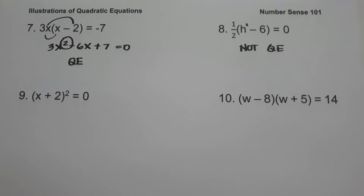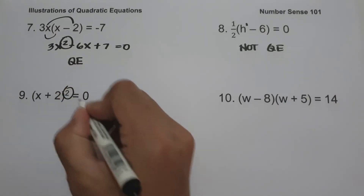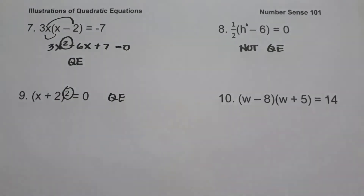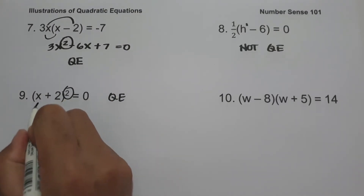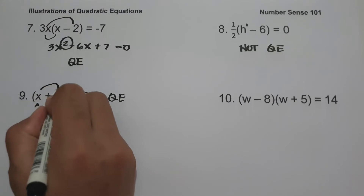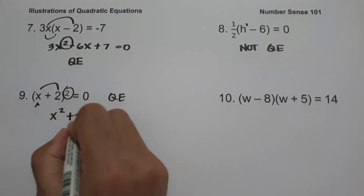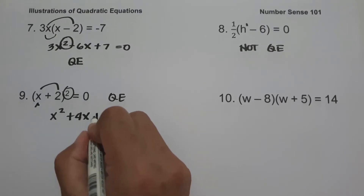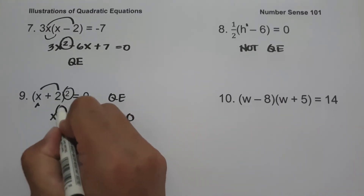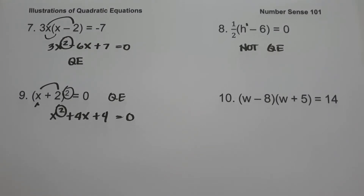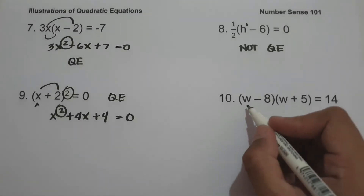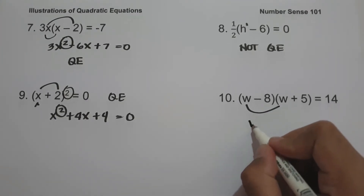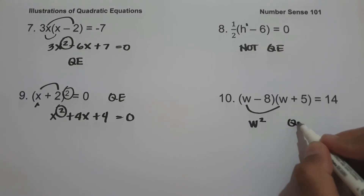On number nine, we have (x plus 2) squared equals zero. By inspection, the highest exponent is two, so this is a quadratic equation. Expanding: x squared plus 4x plus 4 equals zero — the highest exponent is still two. On number ten, we have (w minus 8)(w plus 5) equals 14. Multiplying the first terms gives w squared, so this is a quadratic equation.